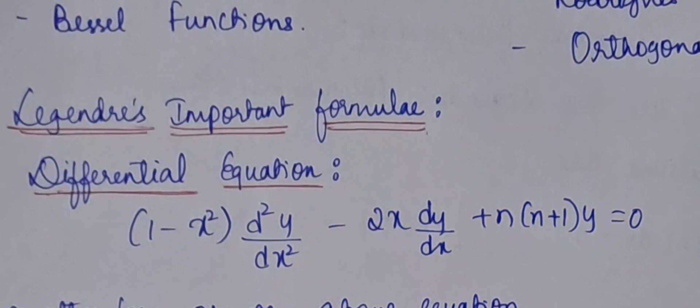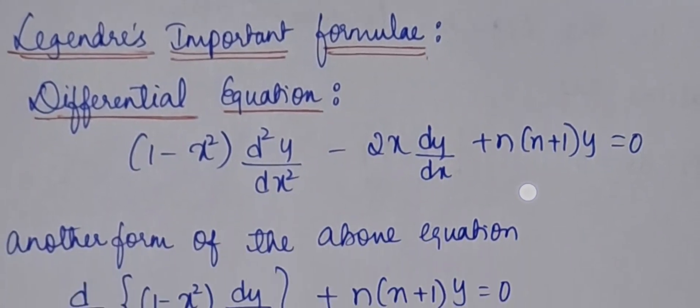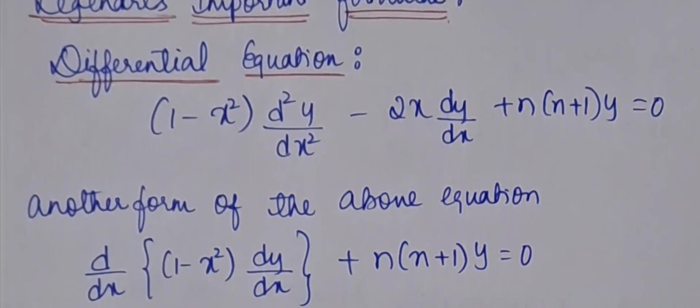The differential equation of the Legendre polynomial is: (1 - x²) d²y/dx² - 2x dy/dx + n(n+1)y = 0. This is the differential equation of the Legendre polynomial, expressed in one formula.